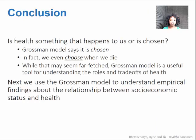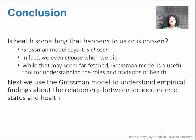In conclusion for this week: is health something that happens to us, or do we choose it? The Grossman model says that we choose it. In fact, we even choose when we die. That feels far-fetched, but the Grossman model is a useful, clear, and precise way to describe the trade-offs that people face in regards to how they think about and interact with their own health. Next week, we're going to use the Grossman model concepts to discuss socioeconomic disparities in health.